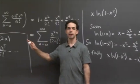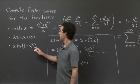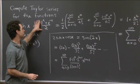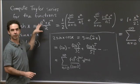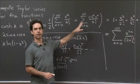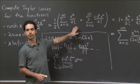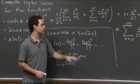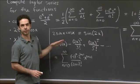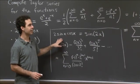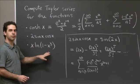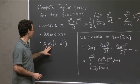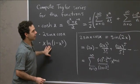To summarize, we computed Taylor series for these three functions using several techniques. For cosh(x), we used the known formula in terms of e^x and e^(-x) and the addition rule for power series. For 2 sin(x) cos(x), we recognized it as sin(2x) and used substitution, though multiplying two power series together also works. For x · ln(1 - x³), we made a substitution into the known ln(1 + x) series, then multiplied by x — a relatively easy operation for power series.